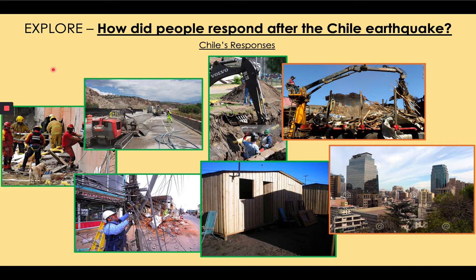Chile's response was so effective that within four years it was not noticeable that there had been an earthquake. No one was still homeless, and the economic recovery — the number of jobs gained — had returned to normal levels or better than before the earthquake. Economic recovery is about gaining jobs; human recovery is about people being treated for injuries and returning to normal life. Chile was successful largely because it didn't depend on foreign aid — most work was done by Chilean workers, so the response was faster and Chile didn't owe money to other countries.